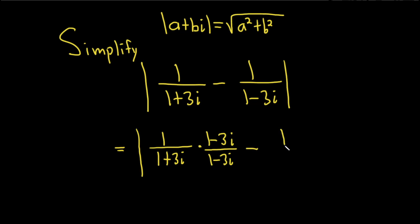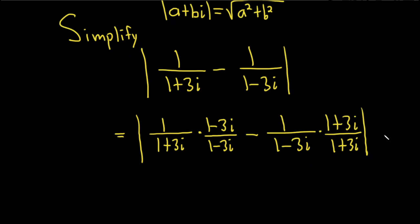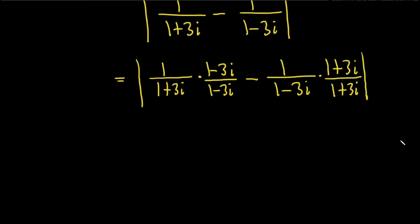Minus 1 over 1 minus 3i times 1 plus 3i over 1 plus 3i. So now we can multiply across in the numerator. So we have 1 times 1 minus 3i, that's 1 minus 3i over.